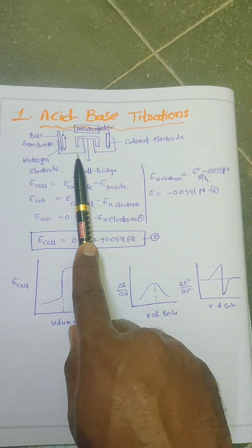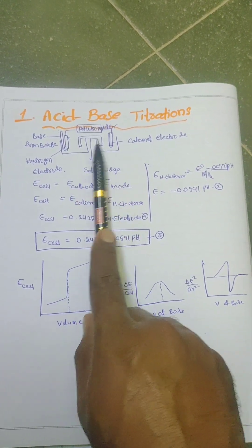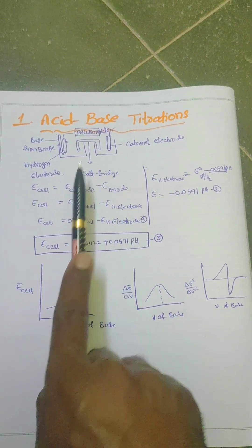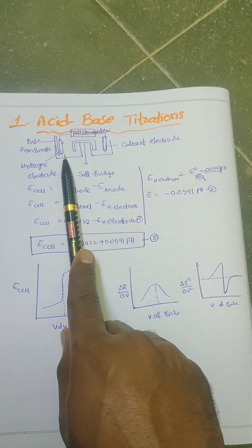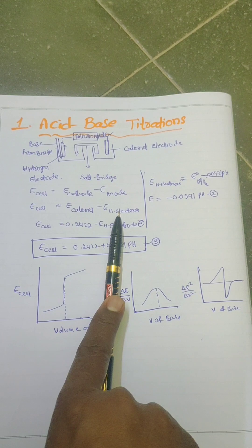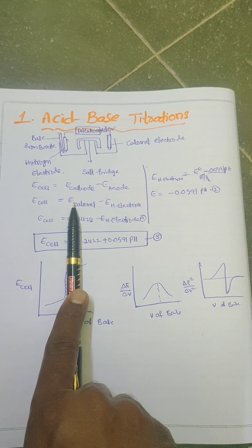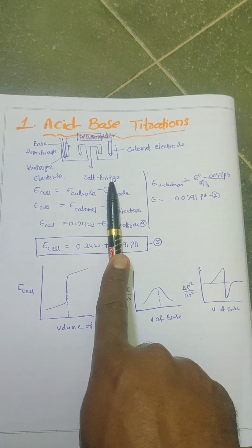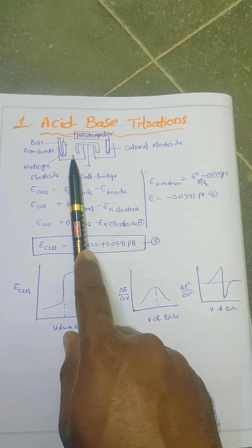As we add the base, the concentration of H⁺ ions decreases. The Nernst equation for this type of cell can be written as: E cell = E cathode − E anode. Here the calomel electrode acts as the cathode and the hydrogen electrode acts as the anode. The standard potential of the calomel electrode is 0.2422 V. The reduction potential of the hydrogen electrode depends on the concentration of H⁺ ions.